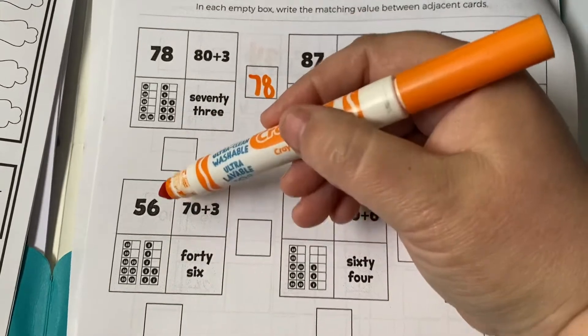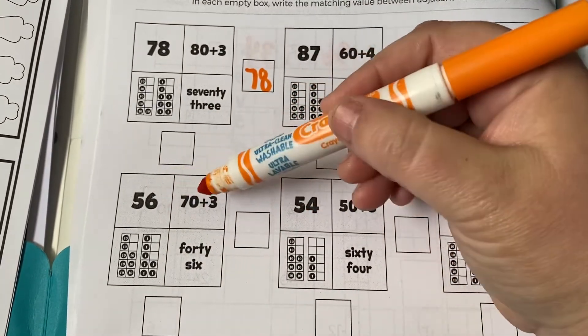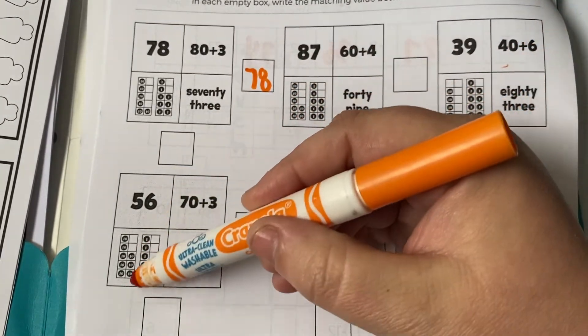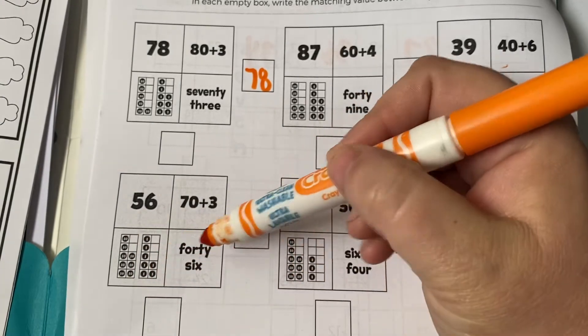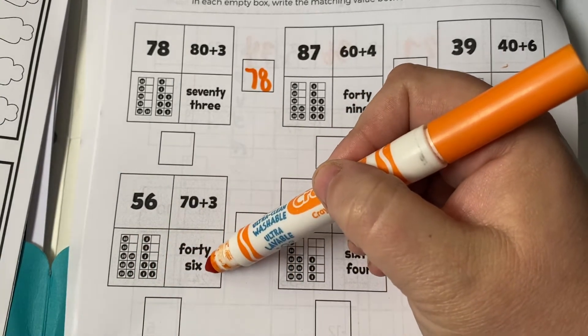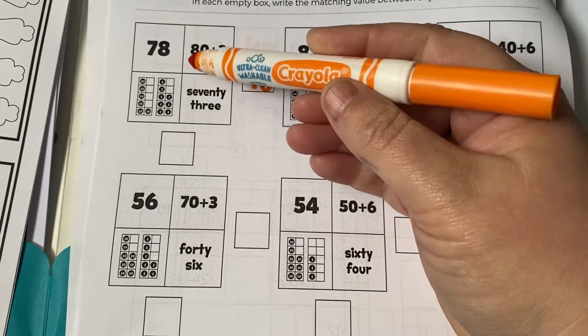So here we have 70—sorry—56, 73, 87, 46. I'm going to try to find the one that's the same.